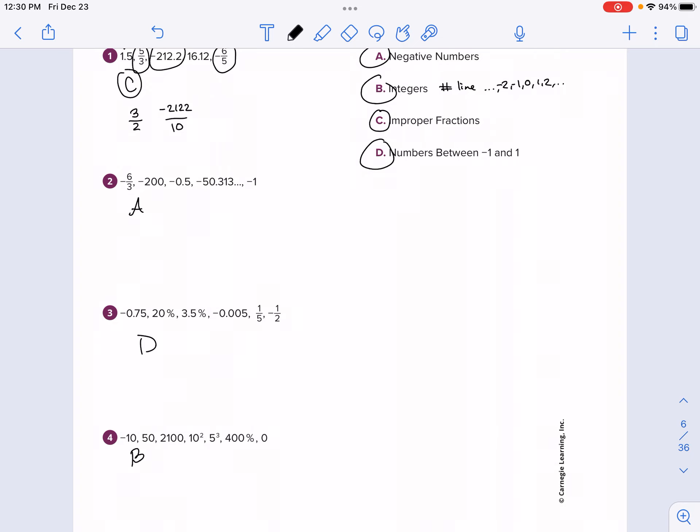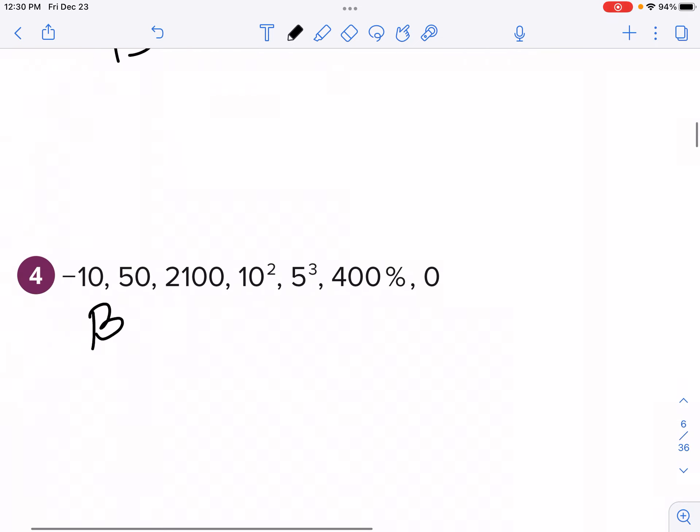And the last one is B. These are integers. We can tell that this one's an integer, that one's an integer, that one's an integer. But what about these other ones? 10 squared, 10 squared is 10 times 10, which is 100. Five cubed, or five to the third power, that means five times five times five, or five times five is 25, and five times 25 is 125. That's a positive integer.